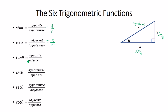Tangent is opposite over adjacent. So you go to your angle theta — opposite is Y, adjacent is X. The hypotenuse is not used here. There is a chant that can help you remember sine, cosine, and tangent, and that chant is SOH-CAH-TOA.